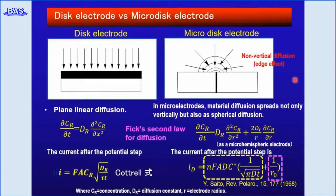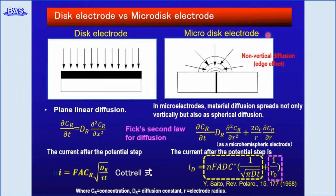These two different CV shapes arise from the difference in mass transfer mode. In the case of a large planar disc electrode, substrate transport to the electrode surface occurs by linear-type diffusion, and the electrode reaction follows Fick's second law. The current value in the potential step method is proportional to the square root of time. On the other hand, in the case of a microelectrode, mass transport occurs at the electrode edge and spherical diffusion takes place. This effect is incorporated into the second term of the equation, and a term related to the radius appears in the current value of the potential step method.